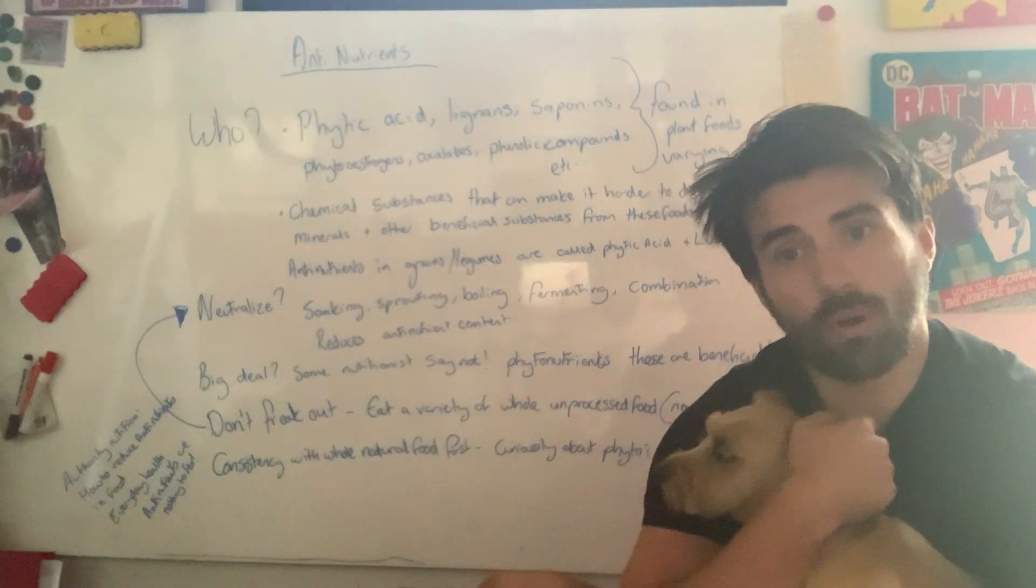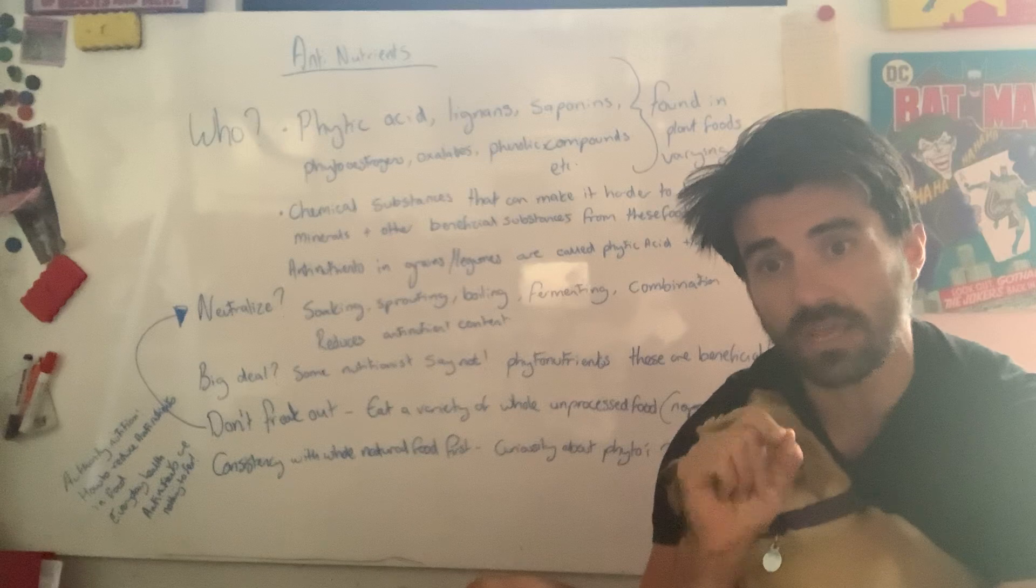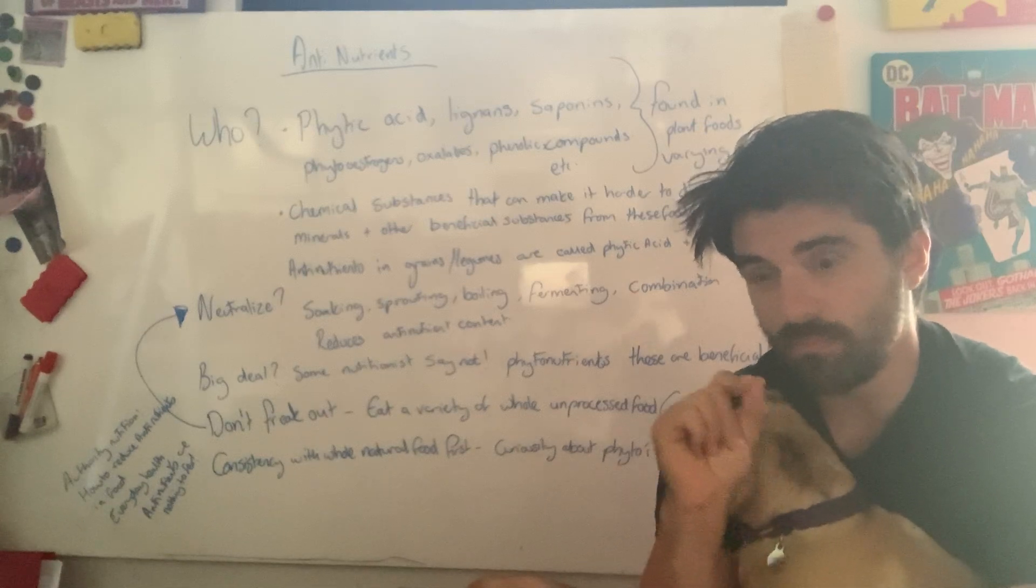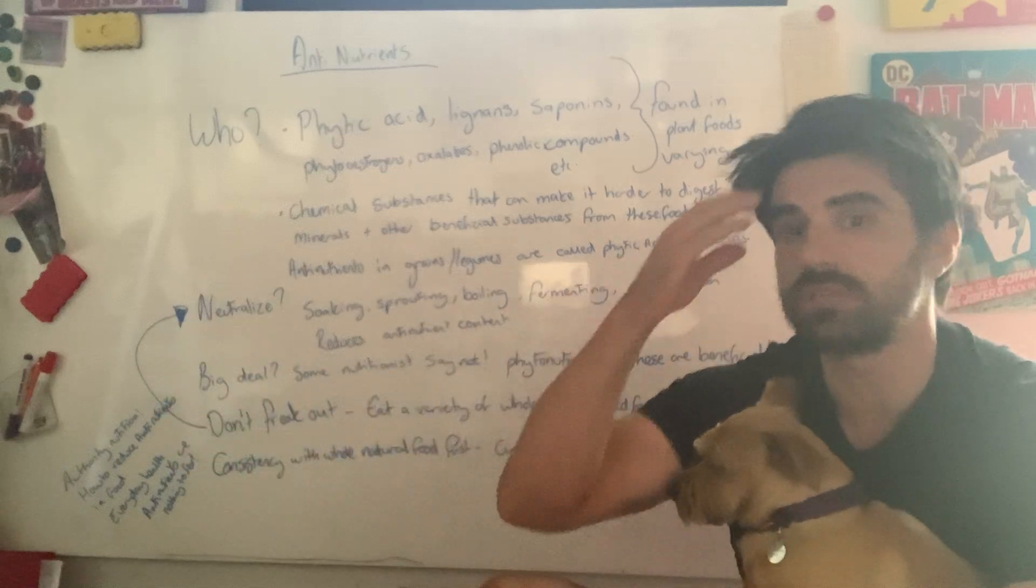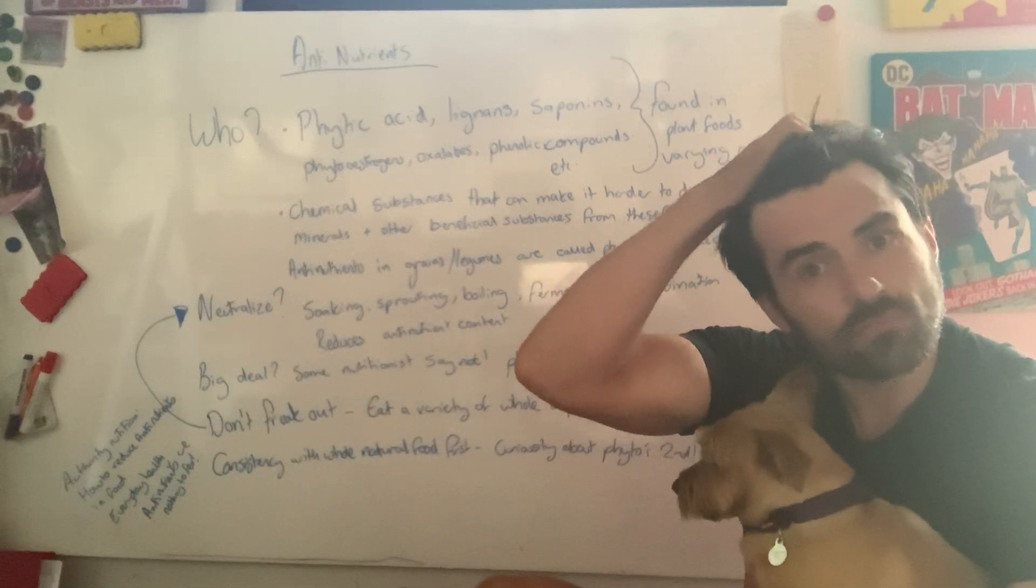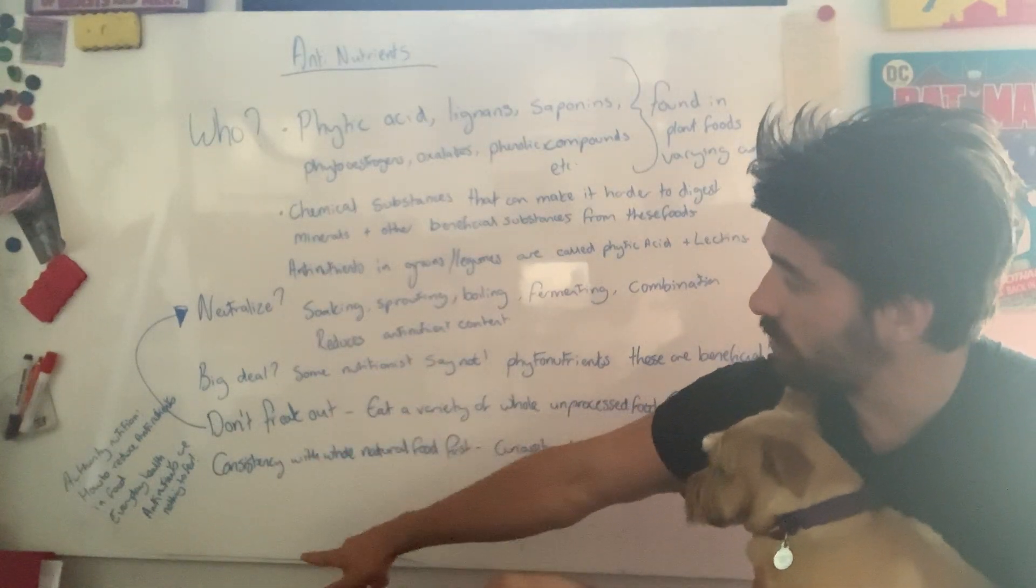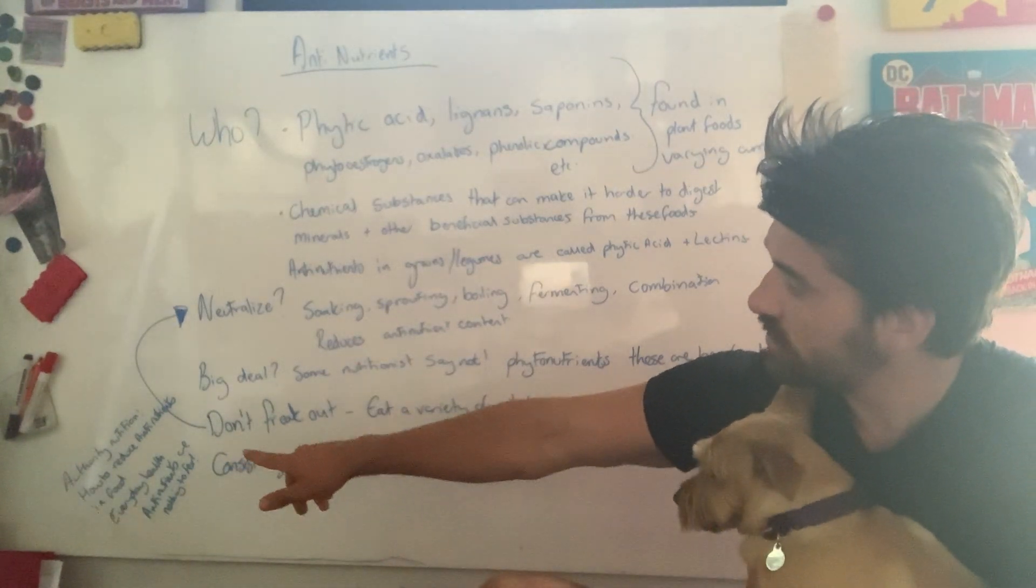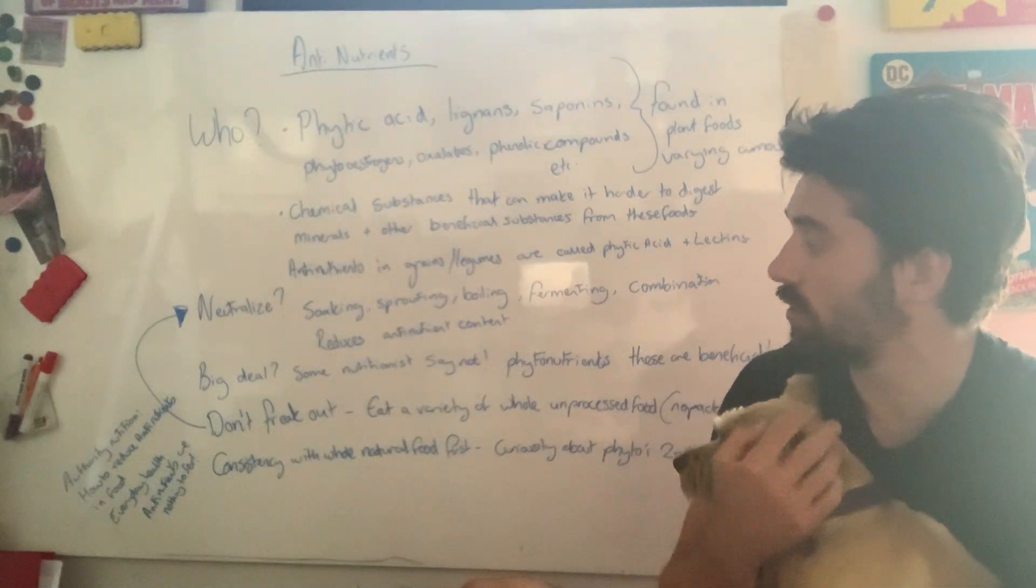So don't get bogged down with this kind of stuff. Consistency first on eating whole foods. And curiosity second on looking at things like anti-nutrients and getting bogged down with those nutritional controversial conversations. If you guys want to read a little bit more about these, look at Authority Nutrition, how to reduce anti-nutrients in food. That's a good one to look at.